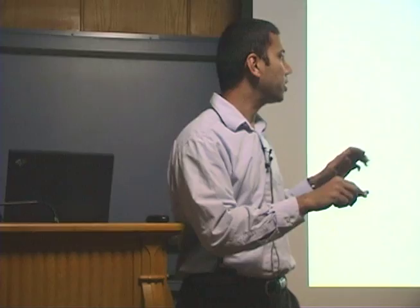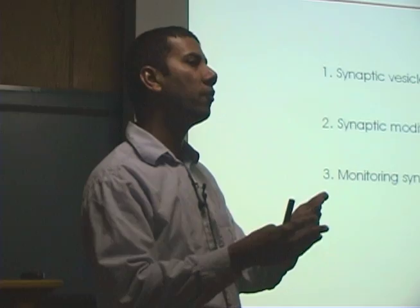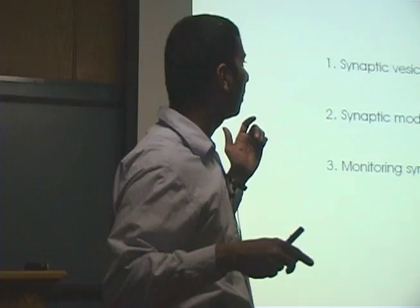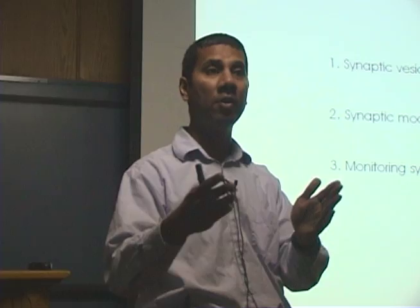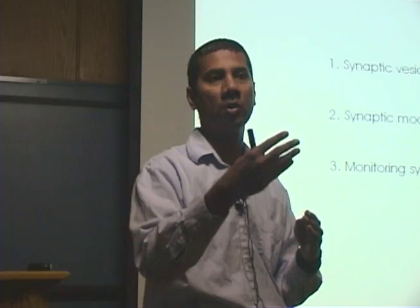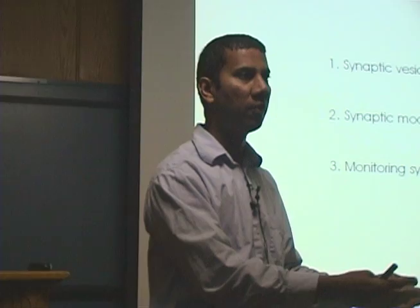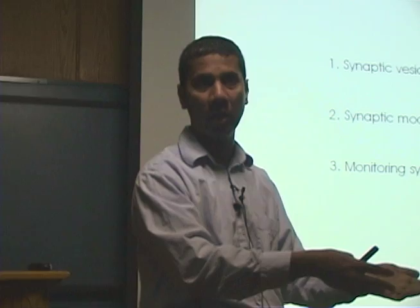The second thing we study in the lab is how synapses can be modified by neural activity. This falls in the category of: we think, partly on faith and partly on evidence, that modification of synapses is a fundamental way in which circuits change. So we give various kinds of activity and find out how synapses can change. And finally — what we always strive toward, and are now actually getting to in our lab — is monitoring synaptic activity in a real, living animal.